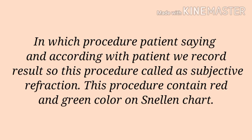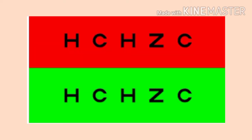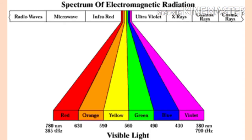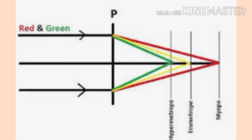This procedure contains red and green color on the Snellen chart. But why only red and green, and why not other colors? Each color has a different frequency. Red color has a high frequency and green color has a low frequency. High frequency focuses behind the retina and low frequency focuses in front of the retina. So we use both these colors for the duochrome test.